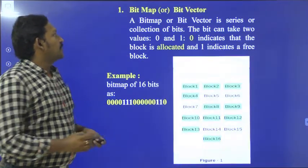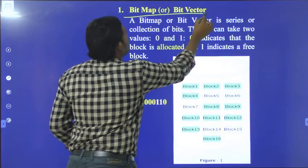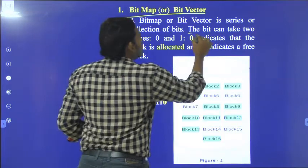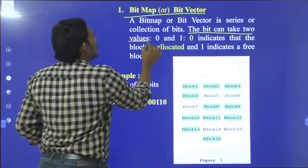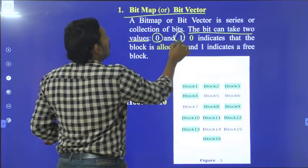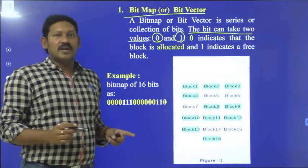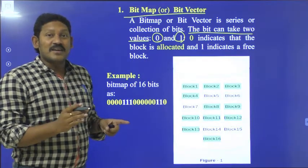Coming to the bitmap, Bitmap or Bit Vector is a series or collection of bits. The bit can take two values: 0 and 1. 0 indicates that the block is allocated, and 1 indicates that the block is free.